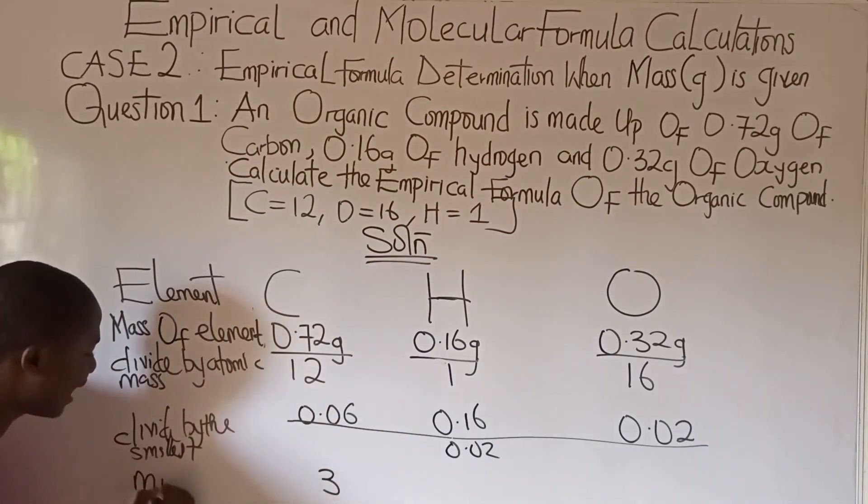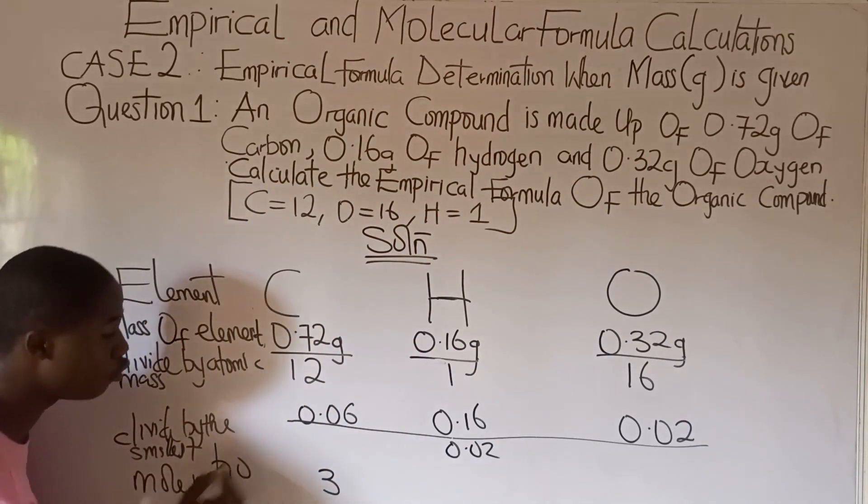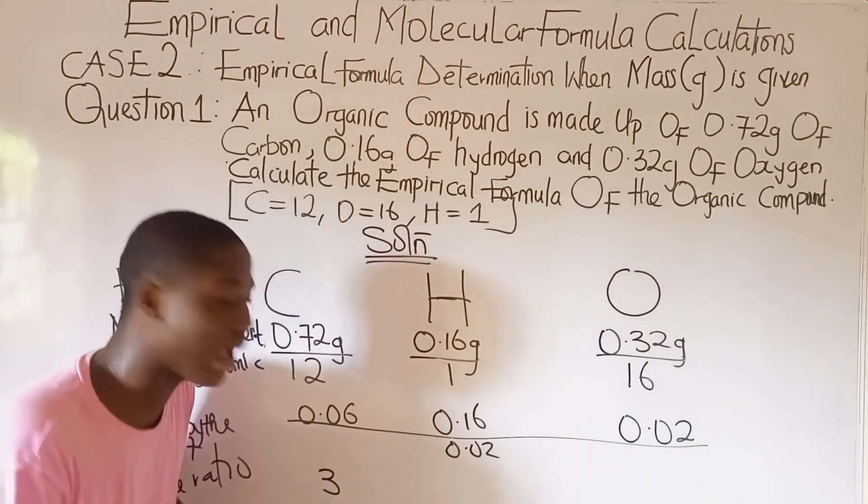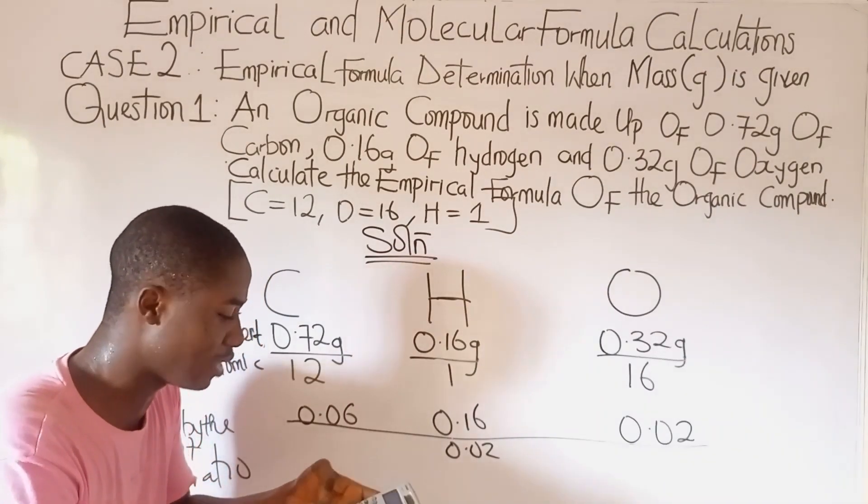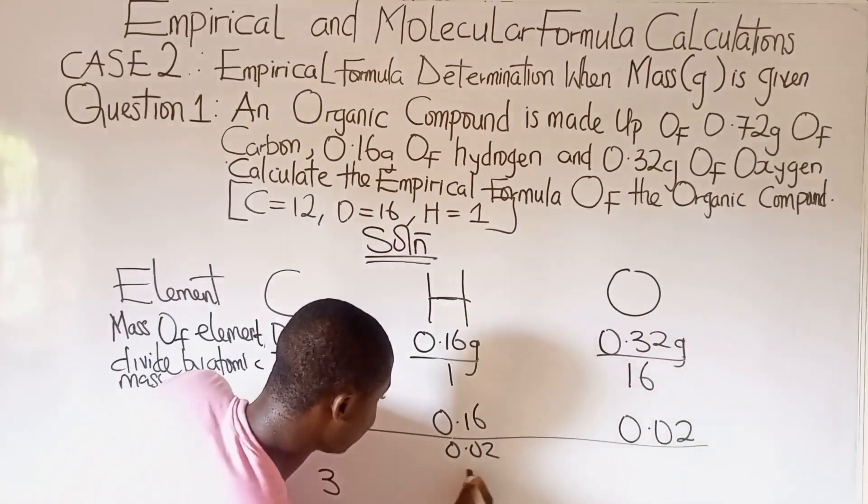That's 3. So these values we are now getting, they call it mole ratio. So here we are having 3. Let's work with this. 0.16 over 0.02. That's 8.